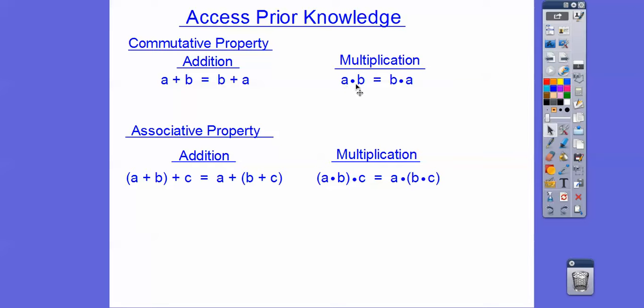Same with multiplication. A times B is the same as B times A. They are commuting around that multiplication sign.